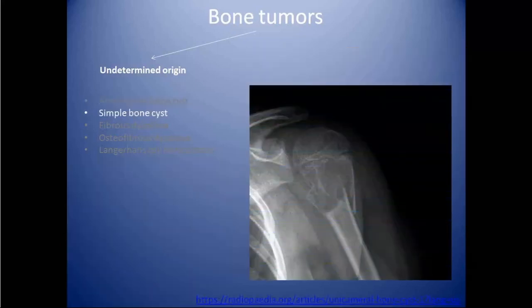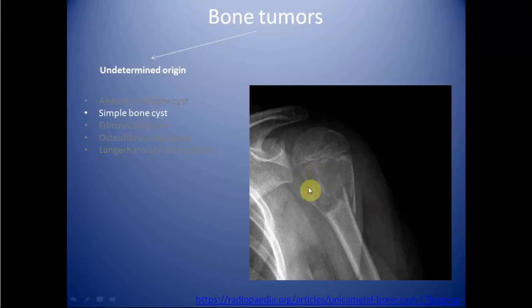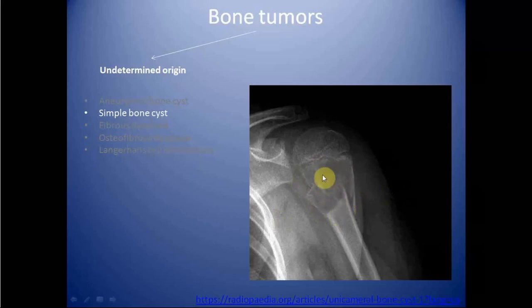Next is simple bone cyst, also known as unicameral bone cyst. It is a common benign non-neoplastic cystic lesion seen in children, most commonly in the metaphysis of the proximal humerus followed by the femur. It is central in location and can present with complications like pathological fracture. If there is a pathological fracture, the fragment will settle into the most dependent location because of the unicameral nature of the cyst — known as the fallen fragment sign.